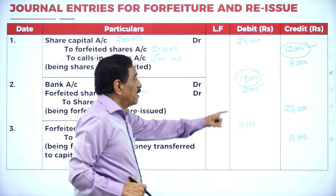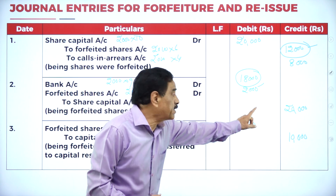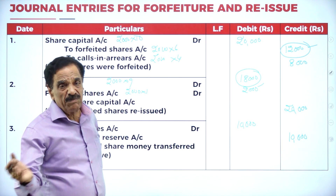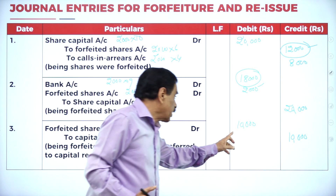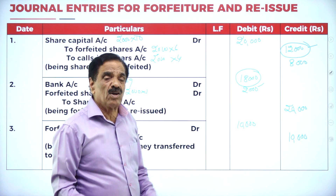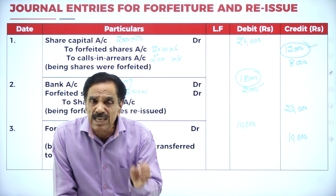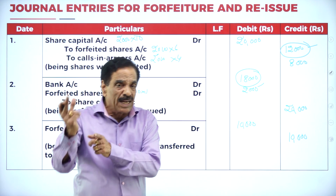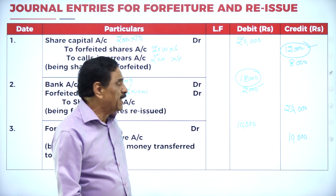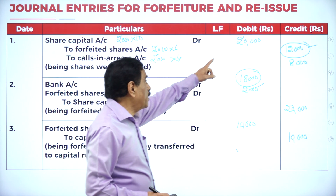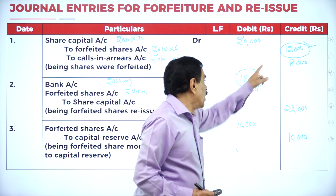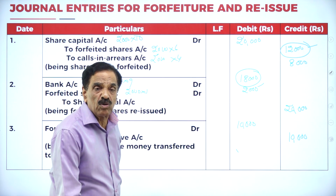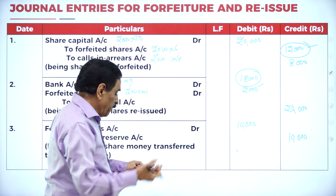Capital reserve is ₹10,000. As I mentioned, if there is any shortage of funds available, the capital reserve can be utilized as capital of the company. It is an extra amount we received - we actually required ₹20,000 but received ₹30,000, so the excess ₹10,000 goes to capital reserve.